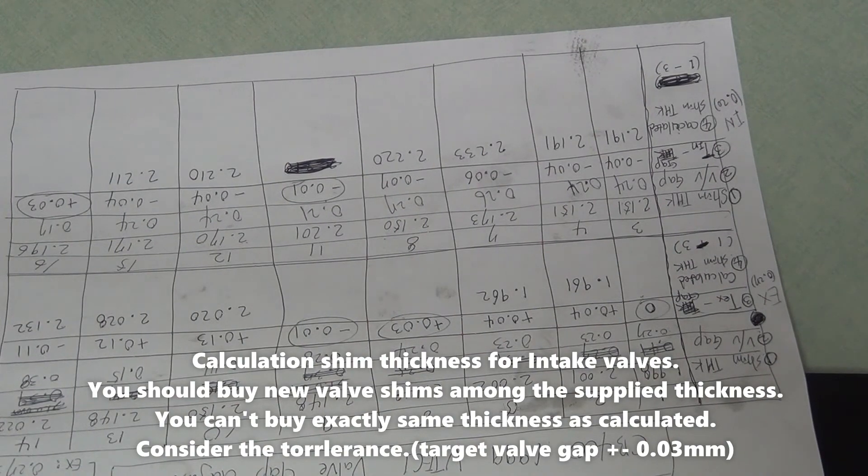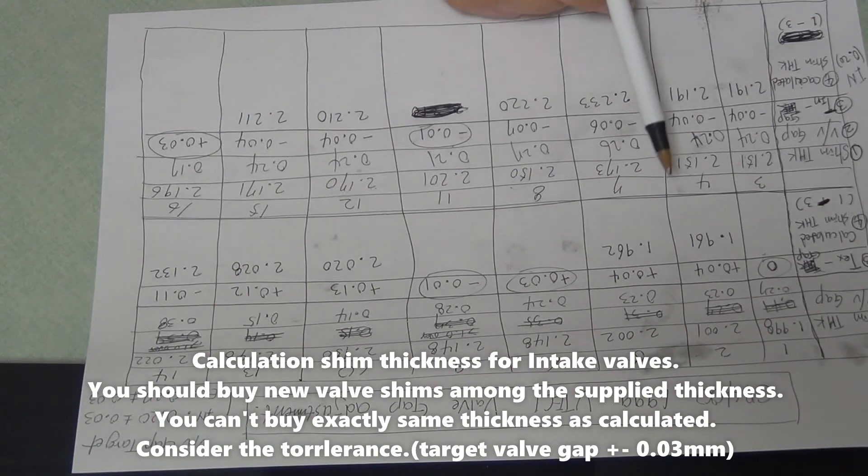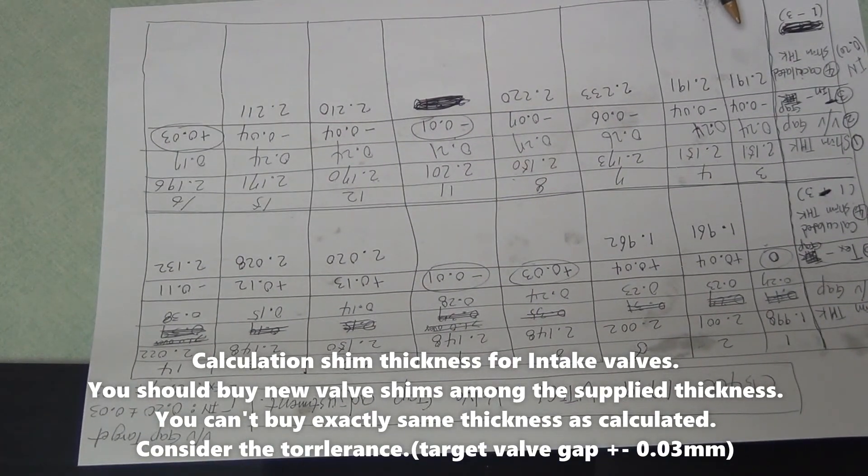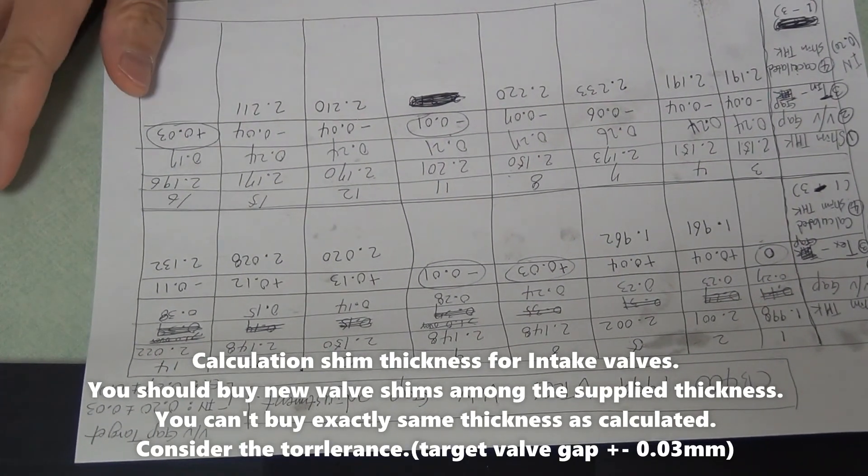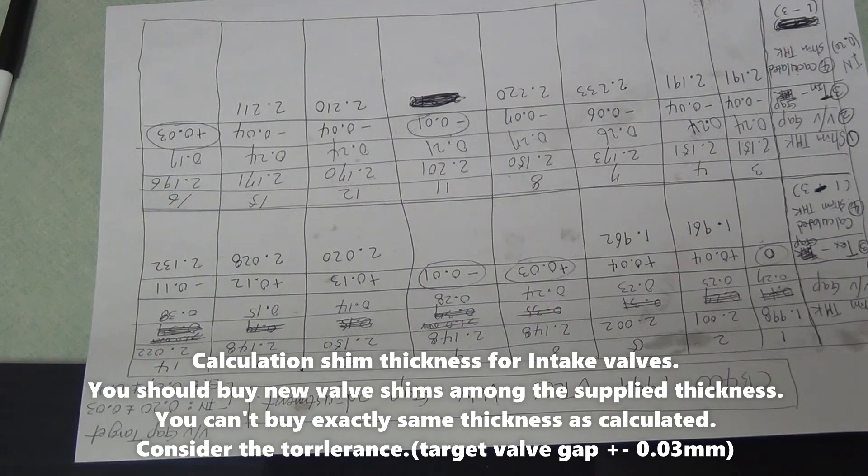So I need 1, 2, 3, 4, 5 for exhaust. 1, 2, 3, 4, 5, 6 for intake. I need 9 new shim needed. I need 9 of new valve shims.